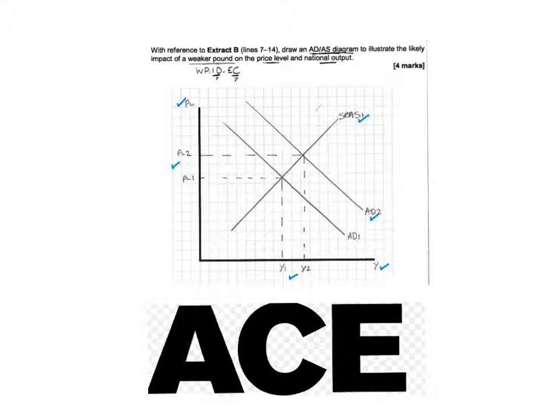actually, you could draw two different diagrams. And what I always do is I use, for example, if it's a strong pound, I use SPICED, strong pound, imports cheaper, exports dearer. And I collect the imports being cheaper as one and the exports being dearer as an alternative. And with a weaker pound, I use WHIPPYDEC. So, a weak pound, imports dearer or exports cheaper. So I would use either imports dearer or I look at exports cheaper.